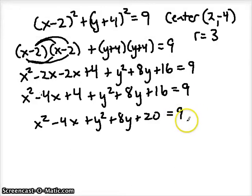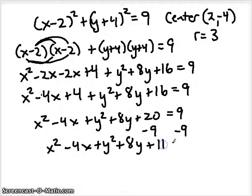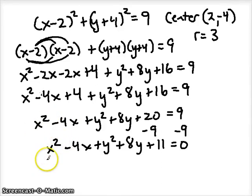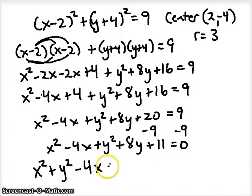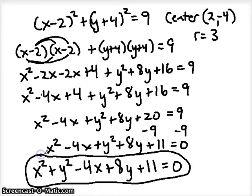We don't want any numbers on the right side — we want it equal to zero. To remove the 9, subtract 9 from both sides, giving 20 minus 9 which is 11. So we get X squared minus 4X plus Y squared plus 8Y plus 11 equals 0. The last step is to rearrange in order of powers alphabetically: X squared plus Y squared minus 4X plus 8Y plus 11 equals 0. This is the equation of the same circle now written in general form.